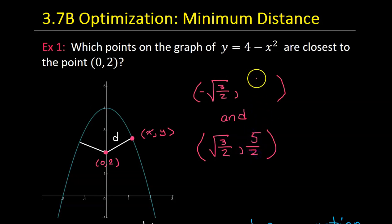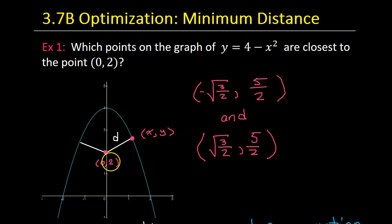And that's it. These are the coordinates of the two points that are as close as you can get to (0, 2).